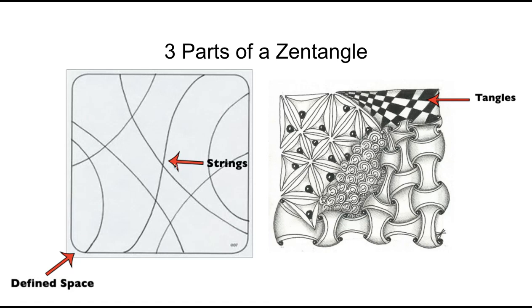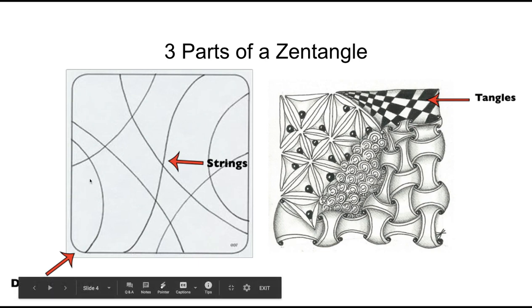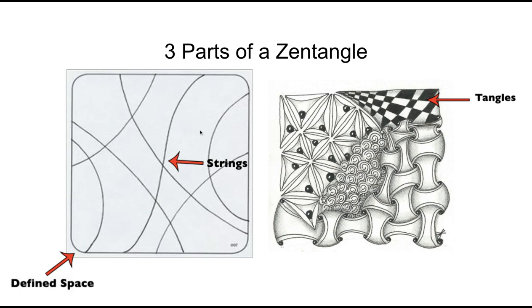which can be straight lines, wavy lines that go across that space to make them into smaller sections. You can have as many or as little as you want. Zentangles, that's where it's very flexible.